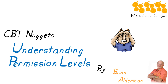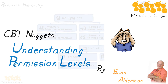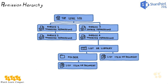Let's get started by taking a look at the permission levels we're most concerned with as an end user. The permission hierarchy starts at the top of the site collection. If we have multiple site collections, each site collection has its own individual permission levels. Within the site collections we create sub sites, and within sub sites we have lists and libraries. Contained within there we can have folders, and within there we can have list items or documents.